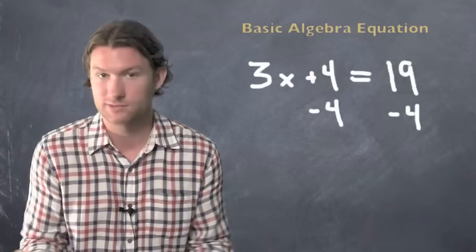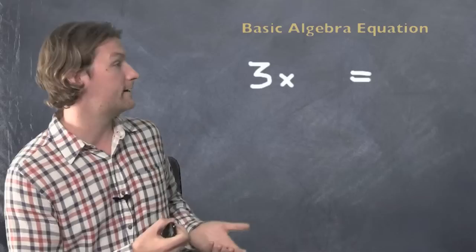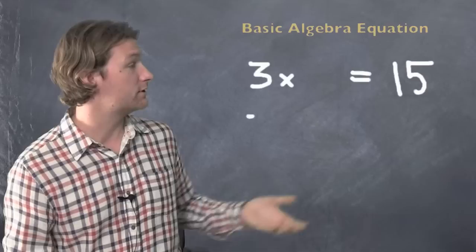What's the inverse of plus 4? It's minus 4, so let's subtract 4 from both sides. What do you get? Those 4s cancel out. That 19 turns into a 15, and we have 3x equals 15.